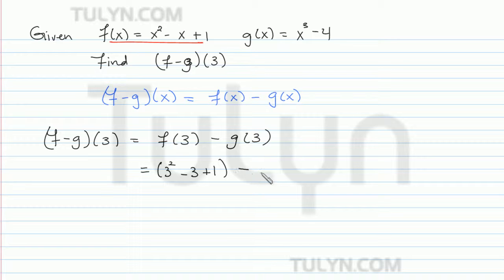And then for g of 3, it's the same idea. g of 3 is g of x when x is equal to 3, so we get 3 cubed minus 4.